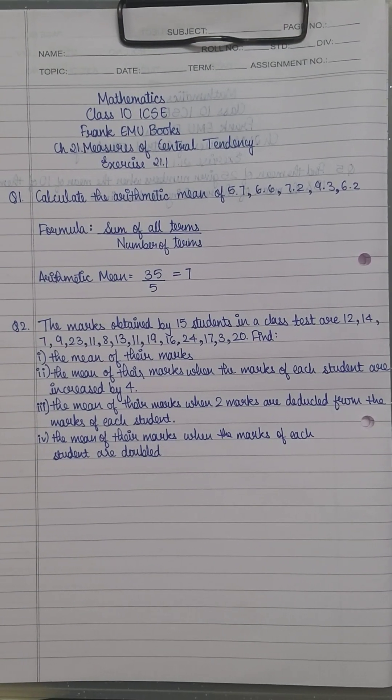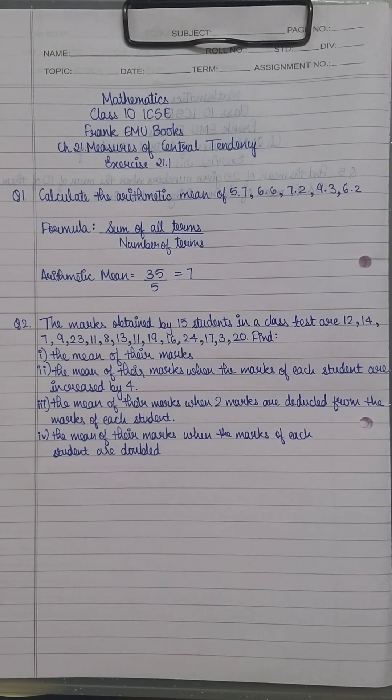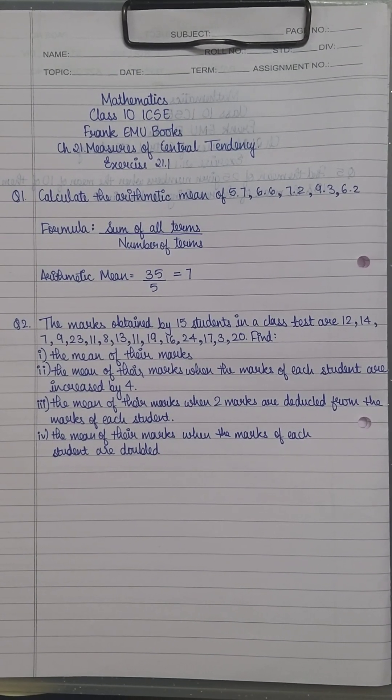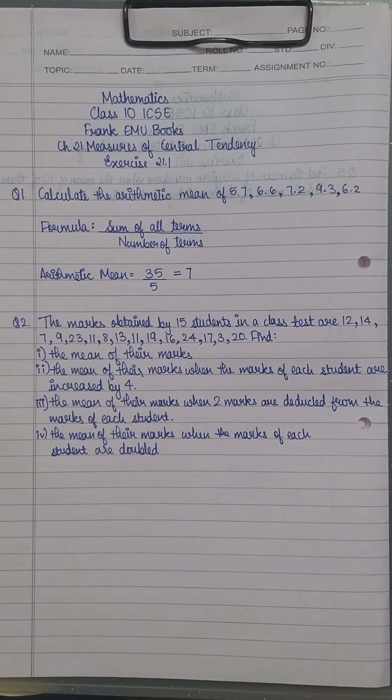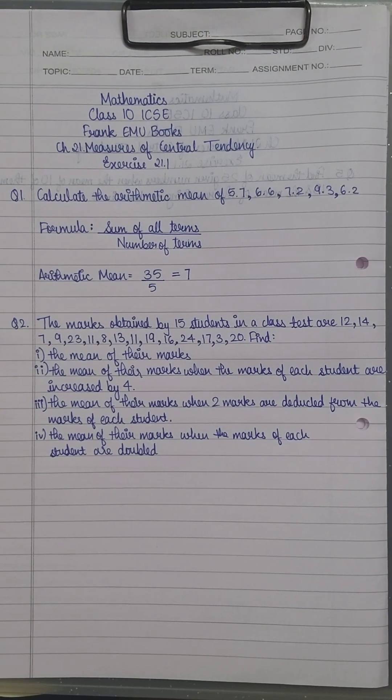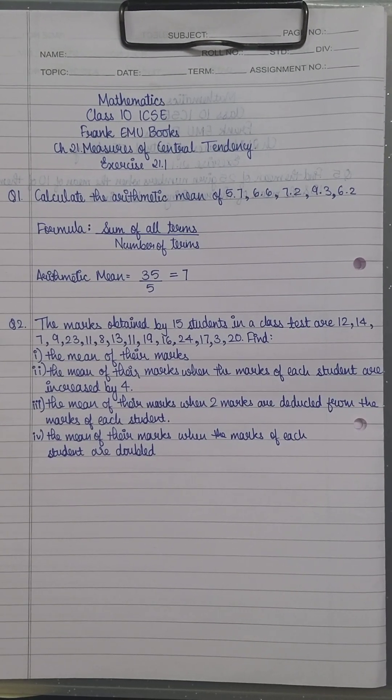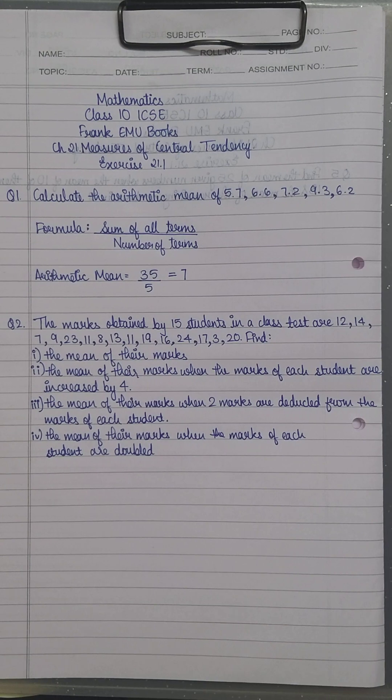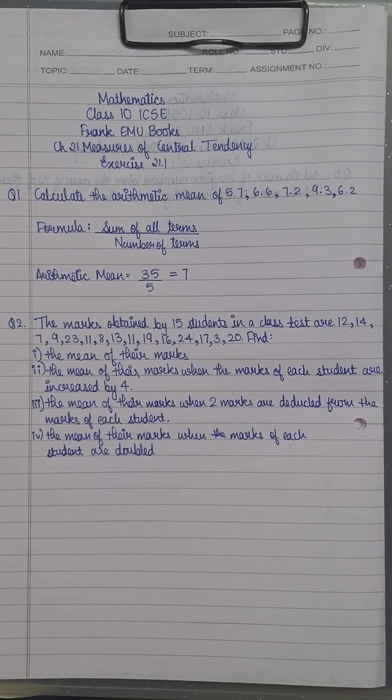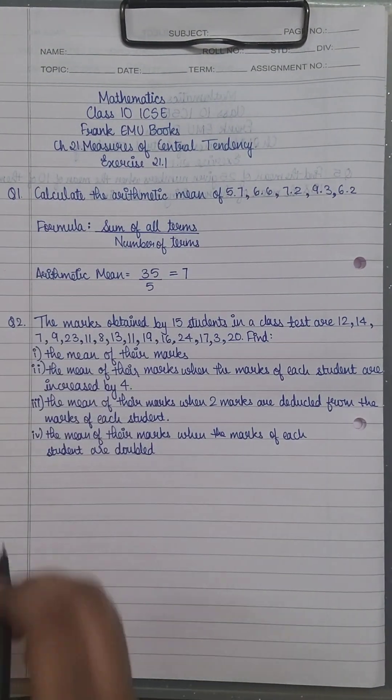There is some tweaking in the number of terms or the sum of terms. Let's get started with part 1. You have the mean of marks, similar to question 1. You have all these marks achieved by 15 students in a particular test.